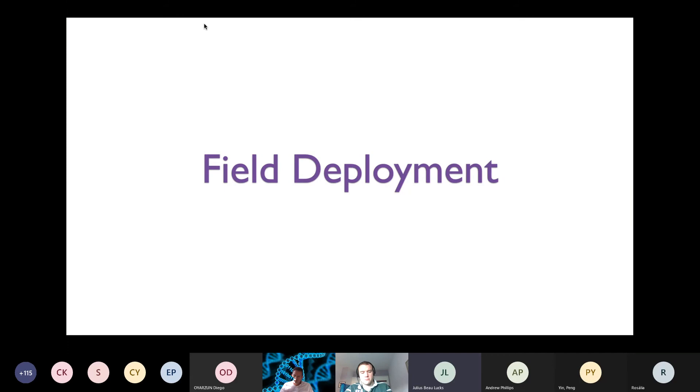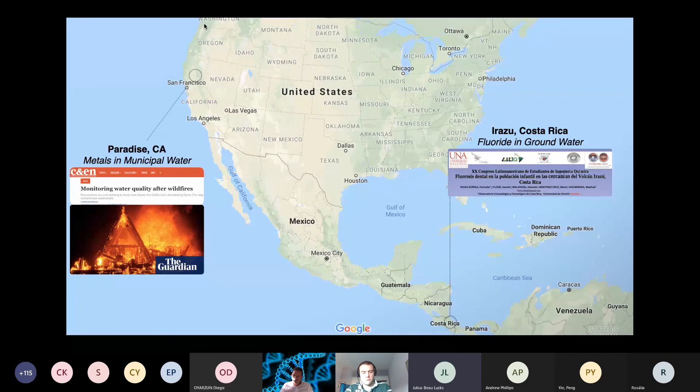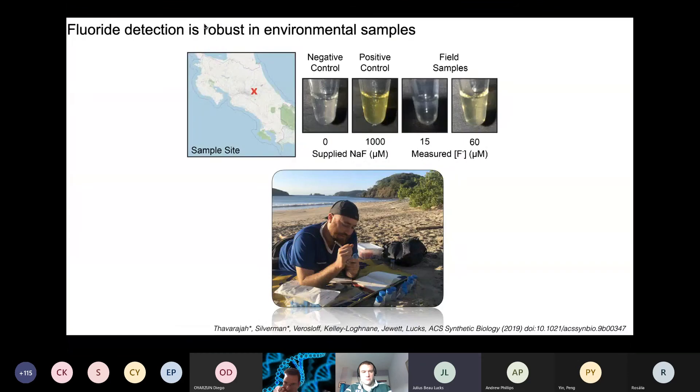I'll just end with some quick notes on field deployment. We've actually taken these out of the lab to a couple places. The first was actually in Costa Rica, where we found a report of high levels of dental fluorosis. We took the fluoride riboswitch sensor there, and Matt Veroslav was able to verify that the sensor worked as indicated. And here he just sampled groundwater, puddles, streams, you name it, and all the positive and negative controls worked, and we were able to find field samples with elevated levels of fluoride in that case. So that was really great.